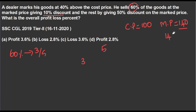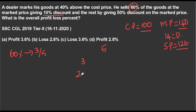Market price is 140, giving 10% discount. So the selling price is 144 minus 14, which is 126. So the profit percentage is 26%. With 100x cost price, we get 26% profit.